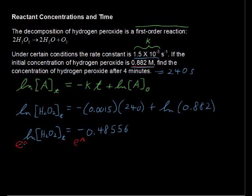So what that does is just gives us just the concentration of H2O2 because e to the natural log of something just gives that something.